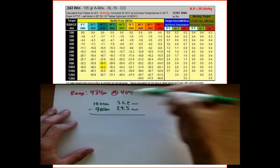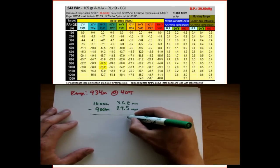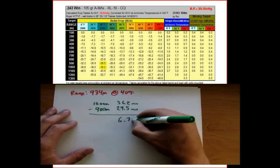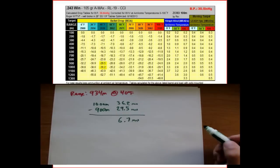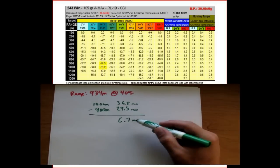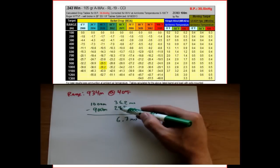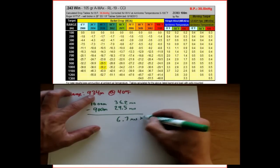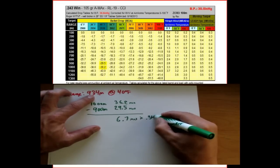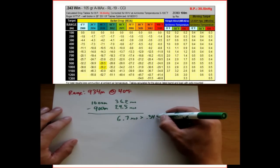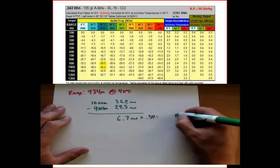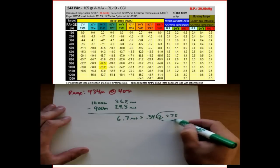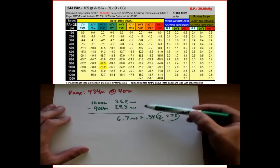First, let's figure out the difference. We subtract 36.2 minus 29.5, and that's going to be 6.7 minutes of angle — that's the difference between the two values. Now we simply take 34% of this 6.7 — 'of' means multiplying — so times 34%. You'll probably use a calculator in the field. That comes out to 2.278.